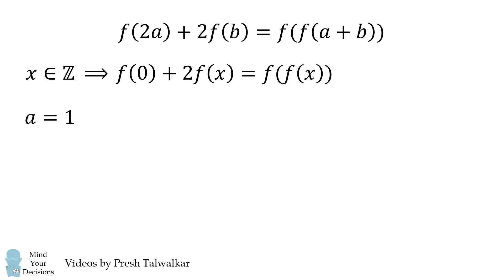let's try the special value A is equal to one. So we take our identity and then substitute A is equal to one. One plus B will be B plus one because addition is commutative. We're now going to take this F of F of B plus one and simplify it. How can we do that?